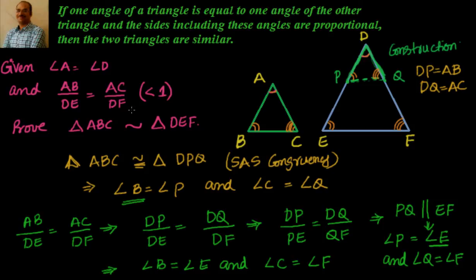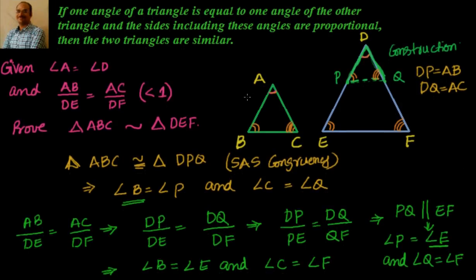Leveraging AB/DE equal to AC/DF, and substituting AB equal to DP and AC equal to DQ, we get DP/DE equal to DQ/DF, which manipulates to DP/PE equal to DQ/QF. This is the converse of the basic proportionality theorem, which says PQ is parallel to EF. If PQ is parallel to EF, then angle P equals angle E and angle Q equals angle F. Since angle B equals angle P, we get angle A equals angle D, angle B equals angle E, and angle C equals angle F — which is AAA similarity, so the two triangles are similar.